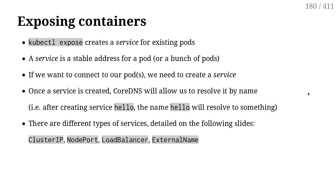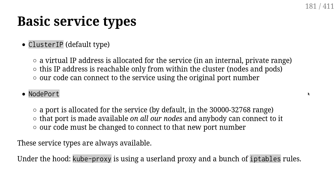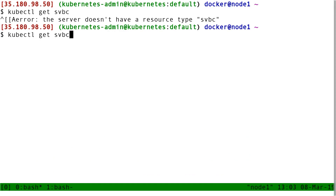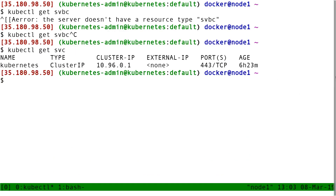There are different types of services, and we are going to see what they correspond to. First, what I've called basic service types — these service types are available everywhere on any Kubernetes cluster. There is ClusterIP and NodePort. ClusterIP is the default service type. When I create a service of type ClusterIP, a special IP address will be allocated for that service. When I do kubectl get services, I see something like 10.96.x.x — this is the ClusterIP for my service.